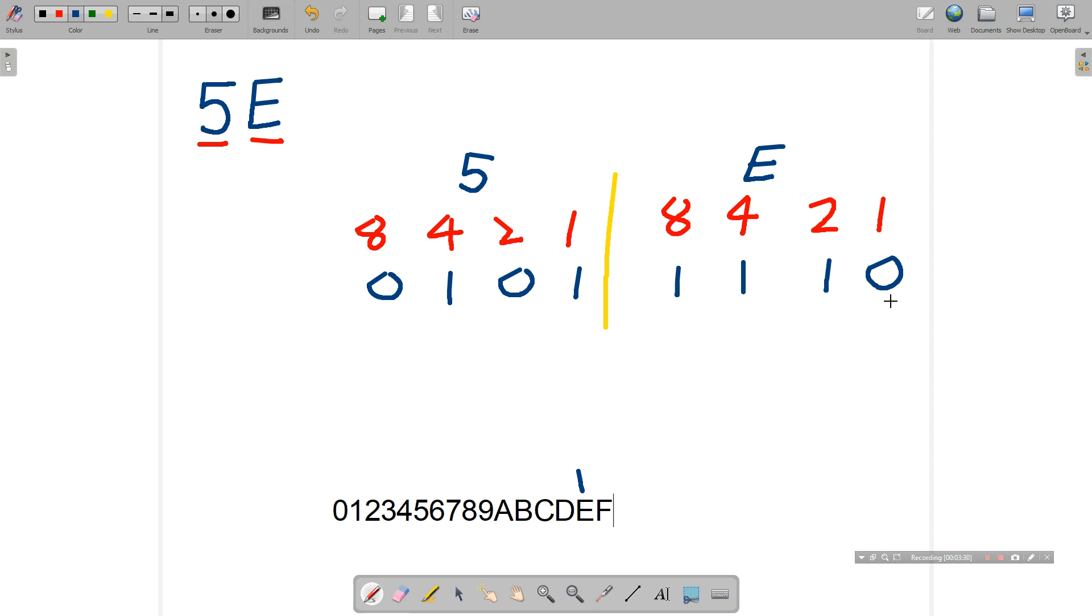Now that we've converted each of those digits individually into binary, it's time to put them together into one single number. So I'm going to remove the split between the two. I'm going to remove those four digits on the left-hand side.